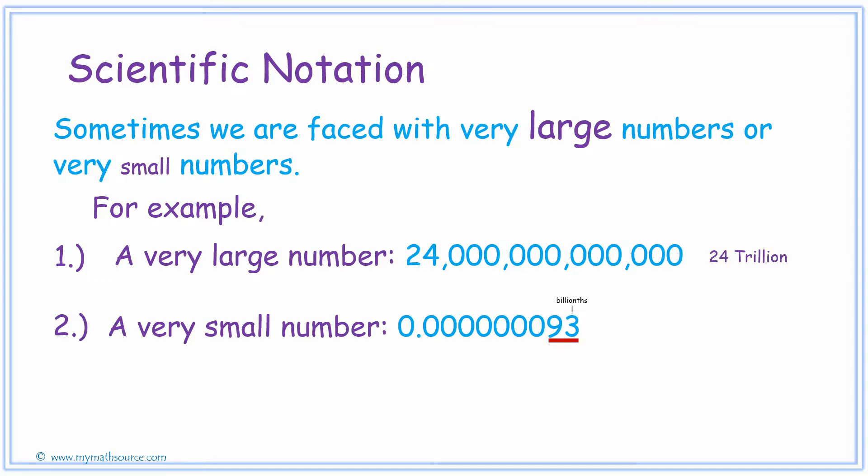you would read the digits after the zeros as a regular number, and then state the place value at the end. So this number would be read 93 billionths.